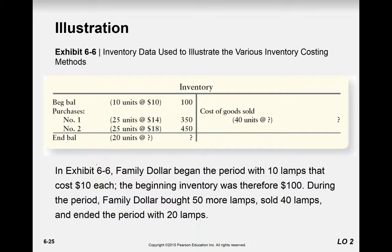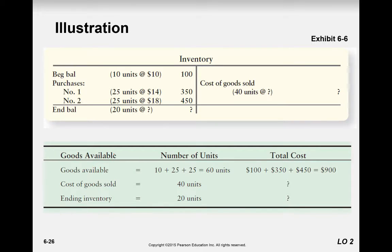Working through an example: we have 10 units beginning balance purchased at $10 each, so beginning inventory is $100. During the period we bought 50 lamps in two installments — 25 units at $14 and 25 units at $18. We then sold 40 units. Goods available for sale (GAS) totals 60 units. The total dollar amount of goods available for sale is the same across all methods because it's what you paid. Only ending inventory and cost of goods sold differ by method.